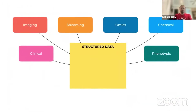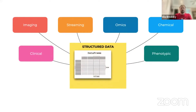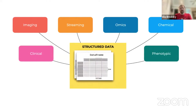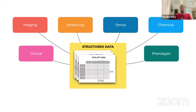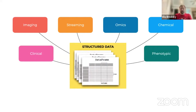All of these types of data — imaging, clinical, streaming data, omics data, chemical data, phenotypic data — what we first need to do is organize them as structured data. And once we have a lot of such data, we can connect the dots between patterns and their biological interpretation.